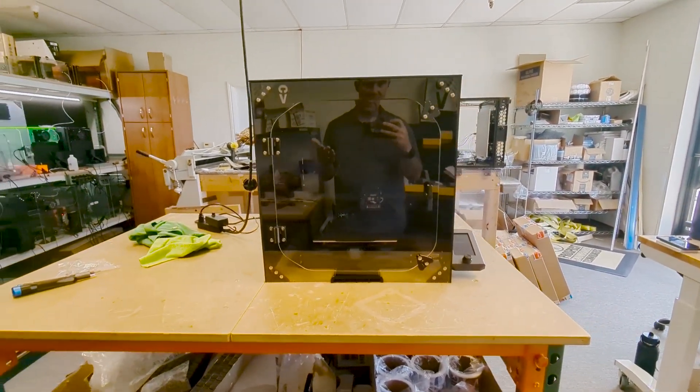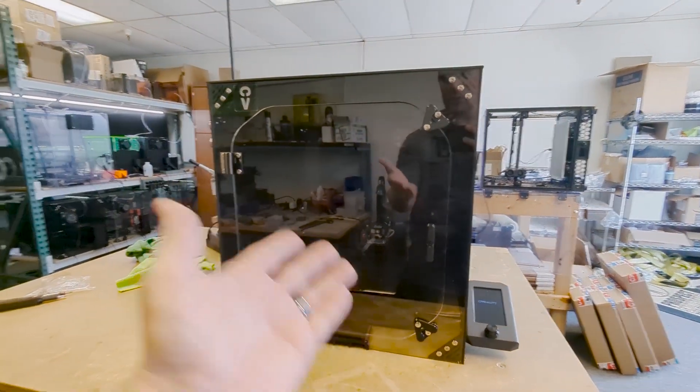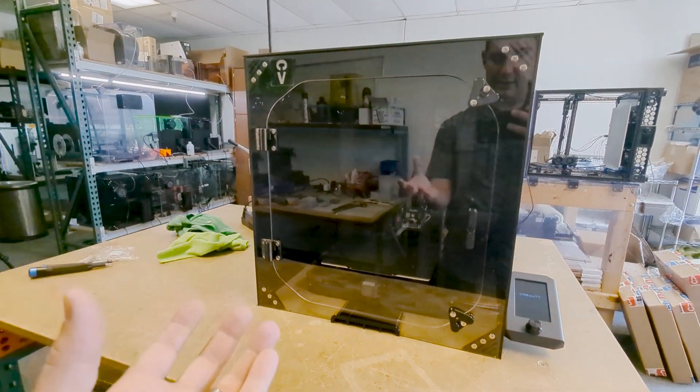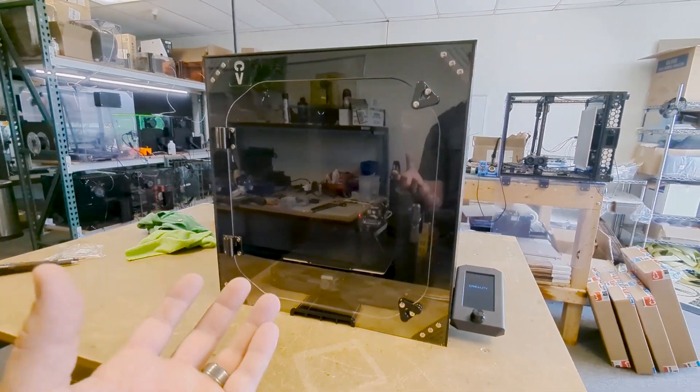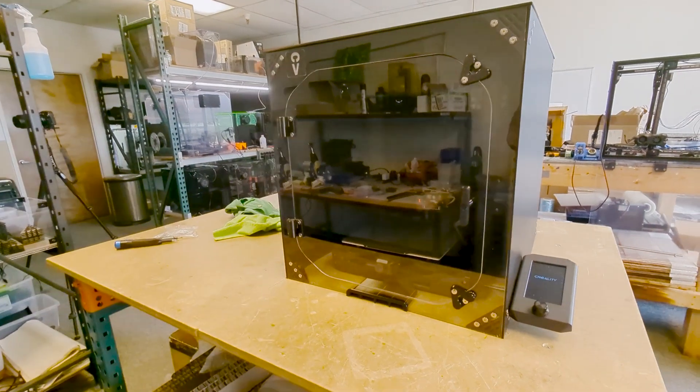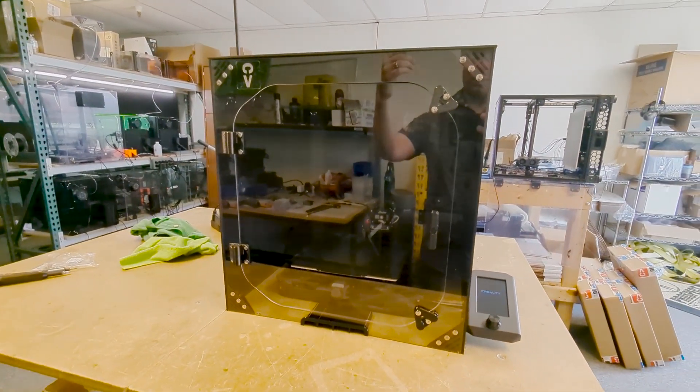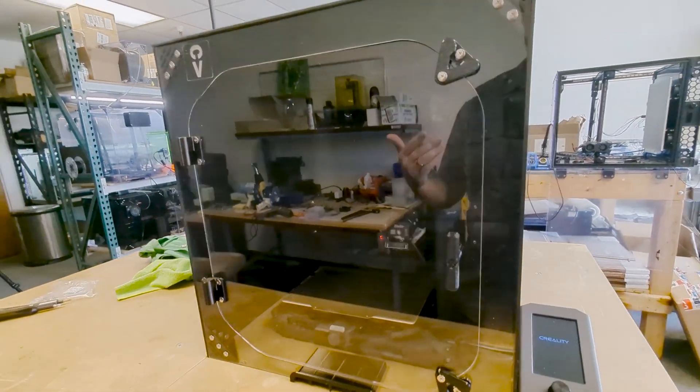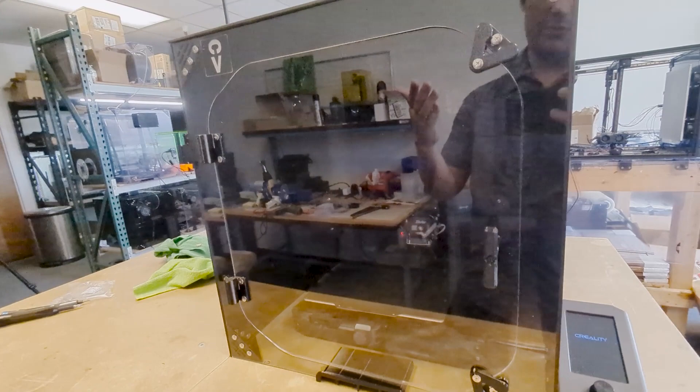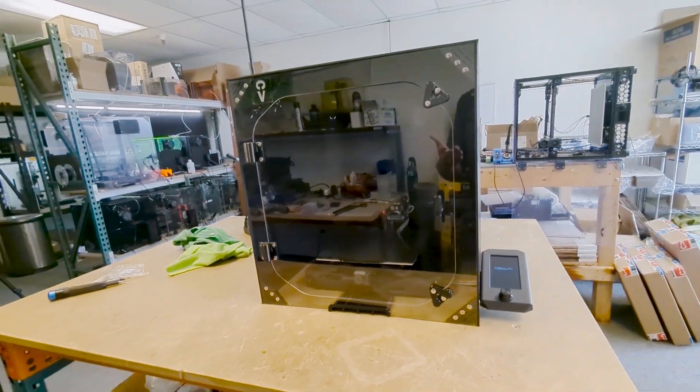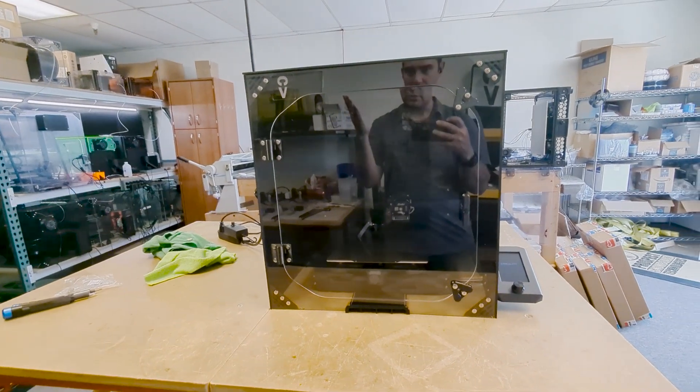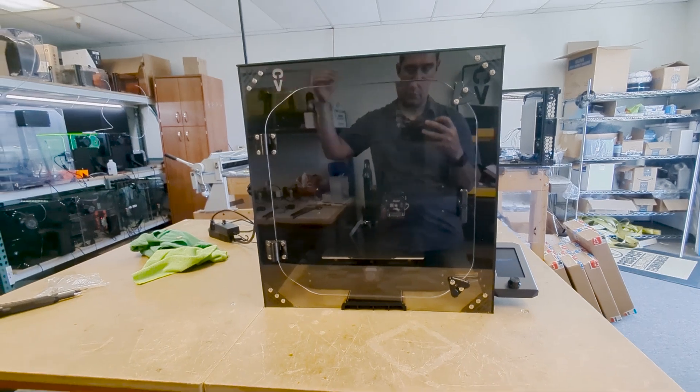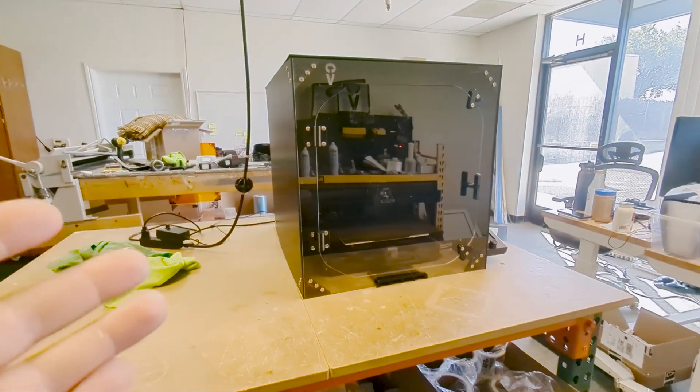As far as having a healthier print environment, obviously the enclosure will help keep any particulate that happens from 3D printing inside. As we 3D print, certain materials can produce some smells and small particulate dust from the filament itself. I'm not saying that's necessarily super harmful, but you would probably prefer to keep it inside the enclosure than have it float throughout the room.